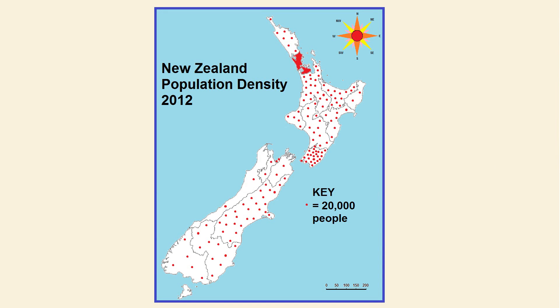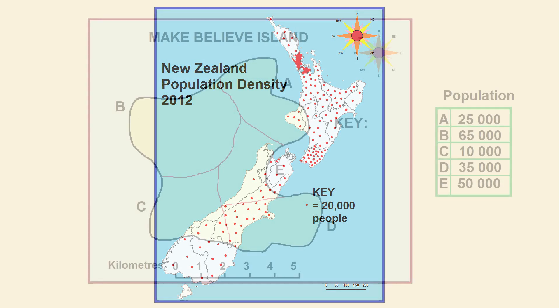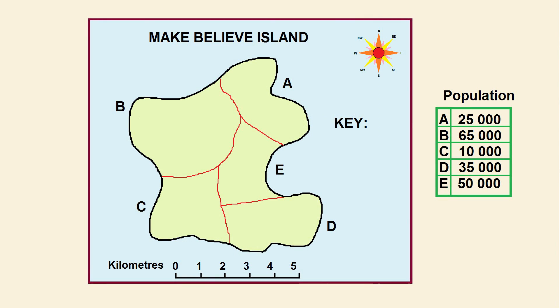Dot distribution maps are used for showing population densities in different regions in a country. What I've done here is I've created a make-believe island which I've named make-believe island.